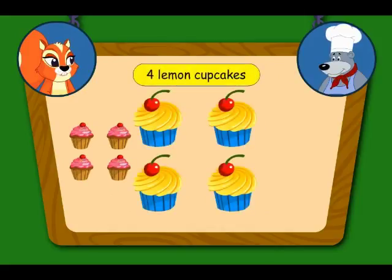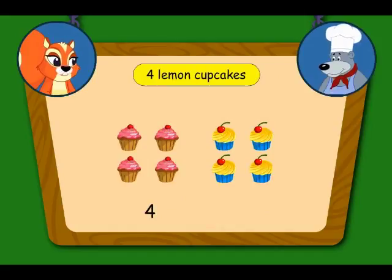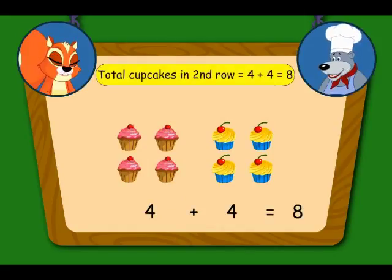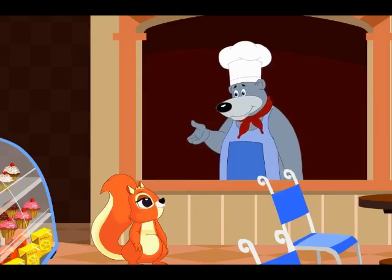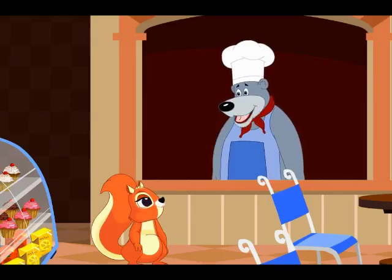Again, four plus four gives me eight cupcakes in the second row. Arranging the cupcakes in groups of four makes it easier for me to count them. Now just by looking at the counter, I can know how many cupcakes of different flavors I have sold.